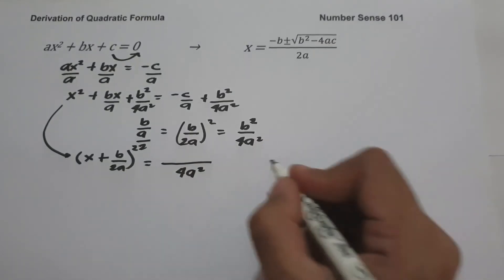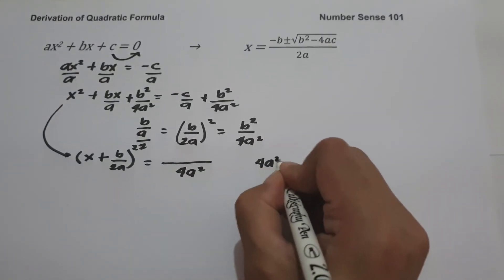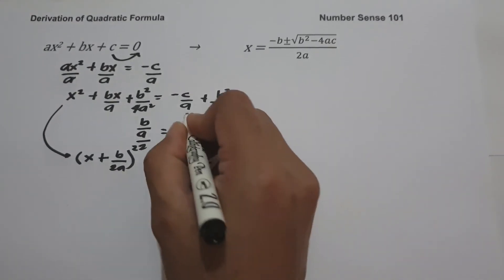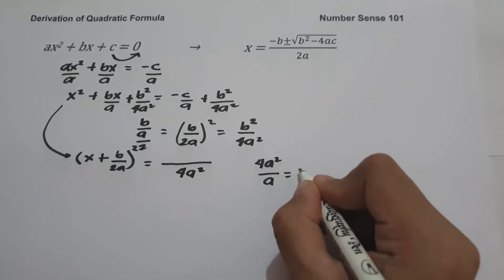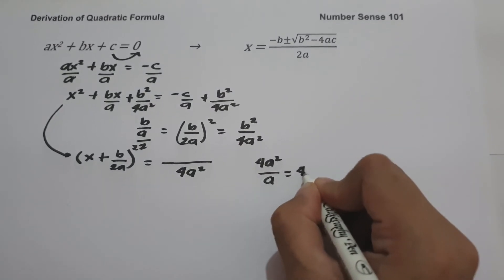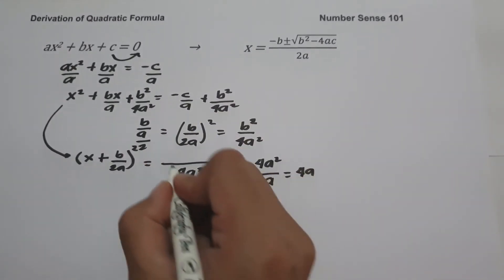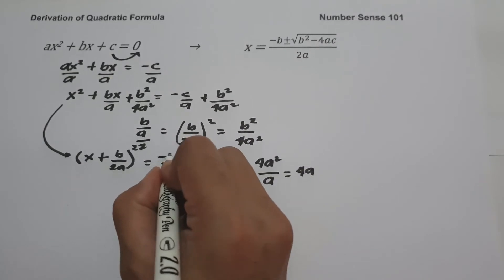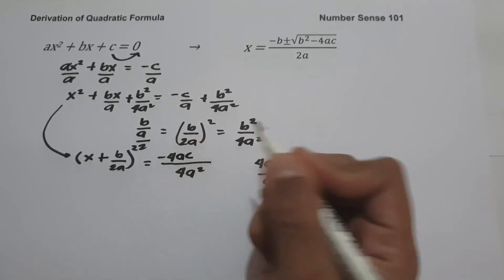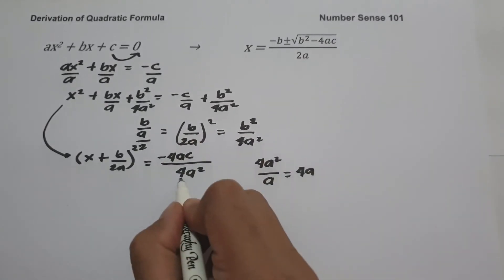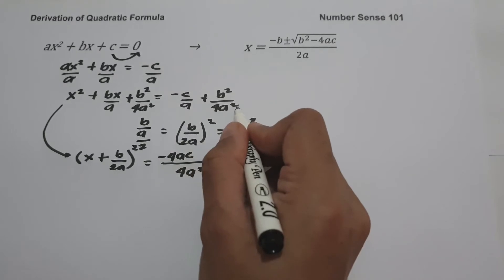Dividing 4a² by a gives 4a. Multiplying 4a by negative c gives negative 4ac. And 4a² divided by 4a² equals 1.